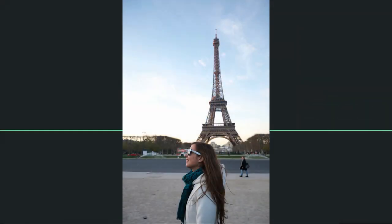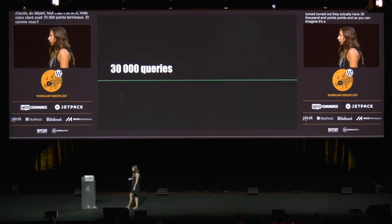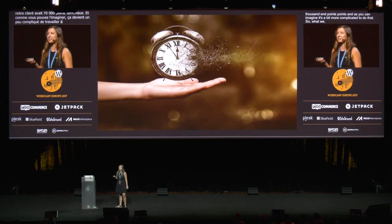Lately we had a project that had a requirement for importing data from an external API. In the beginning we thought we would have five endpoints — get data from five endpoints, save it in WordPress, all good. But it turned out they actually have 30,000 endpoints, and as you can imagine it's a bit more complicated.